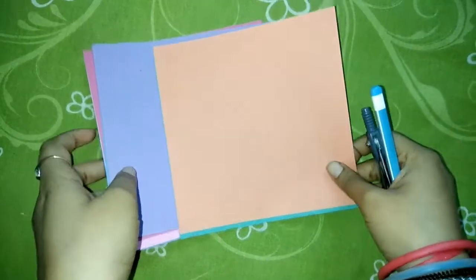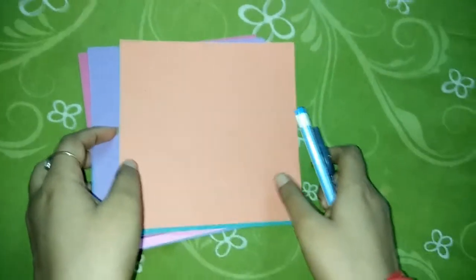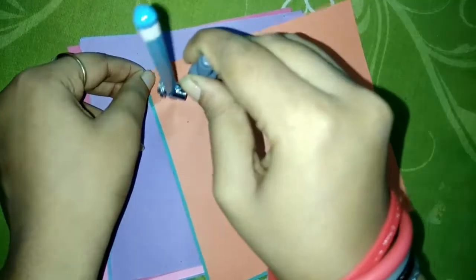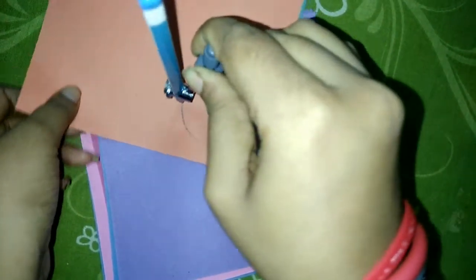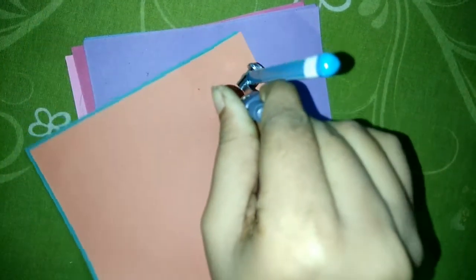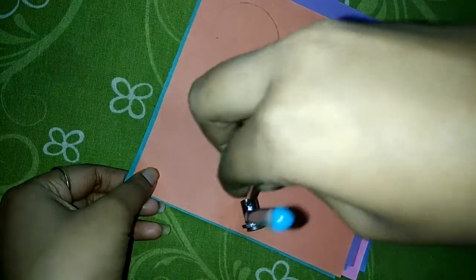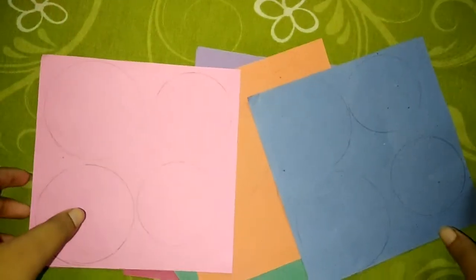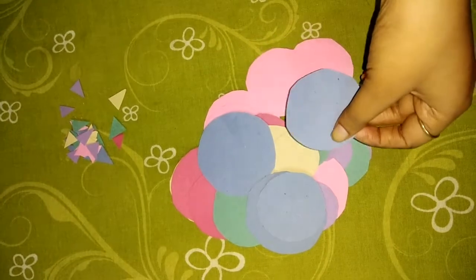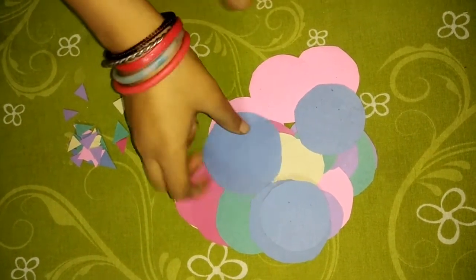Firstly, we will make circles of different sizes on the craft paper with the help of a compass. Now we will cut these shapes. I am done with the circles and have also cut small triangles which I will attach to the circles.